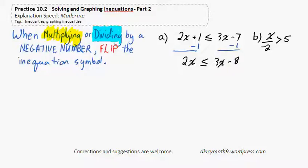Now, I would next subtract 3x from both sides. Again, don't flip the sign, because we're not multiplying or dividing.